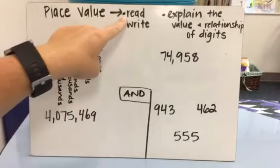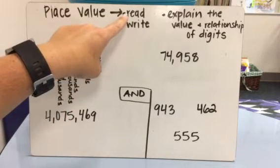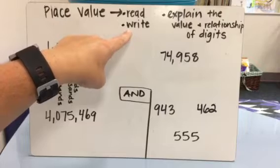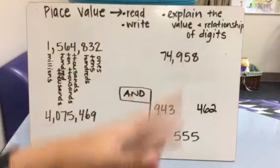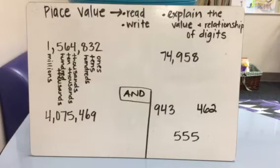They need to be able to read numbers up to the millions place value, write numbers up to the millions place value, and then also explain the value and relationship of digits and between digits. So I'm going to model each of these for you and talk you through some of the problems you might see them come home with or be talking to you about.